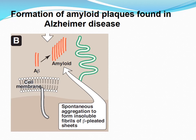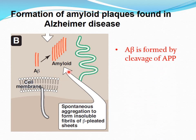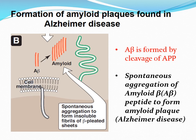Here we can see the formation of amyloid plaques found in Alzheimer's disease. Amyloid beta is formed by the cleavage of amyloid precursor protein, and there is spontaneous aggregation of amyloid beta peptide to form amyloid plaques, which is the characteristic of Alzheimer's disease.